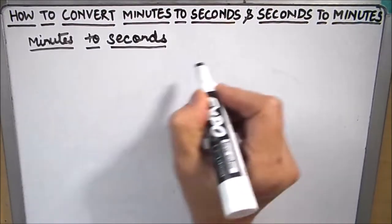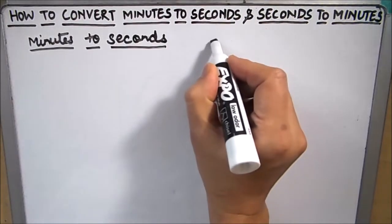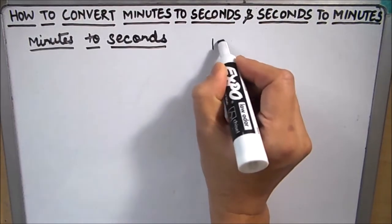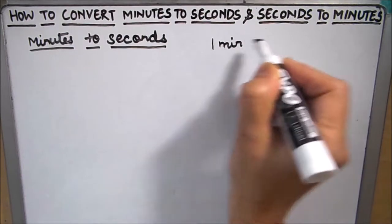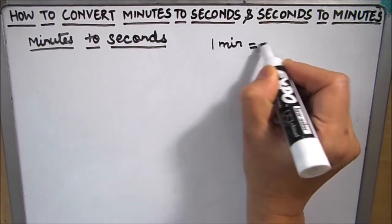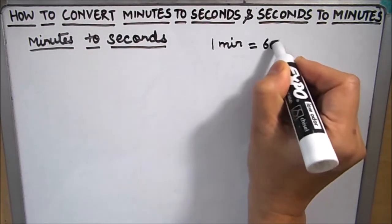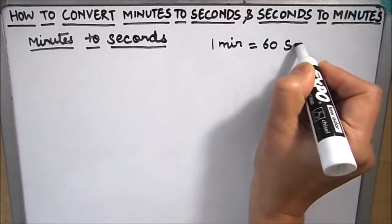For this we should know the basic relation between minutes and seconds, which is 1 minute is equal to 60 seconds.